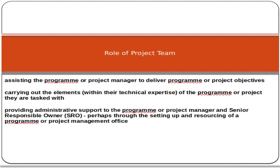Now, what is the role of a project team? A project team is basically assisting the project manager to deliver the project objectives, carrying out the elements of the project they are tasked with, and providing administrative support to the project manager and senior responsible owner — perhaps through the setting up and resourcing of a project management office, or PMO.